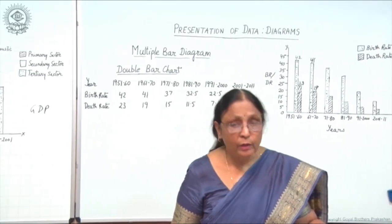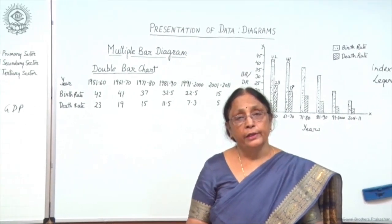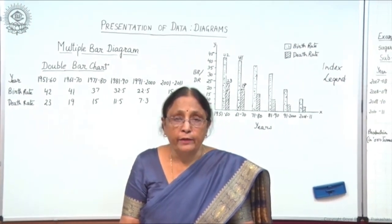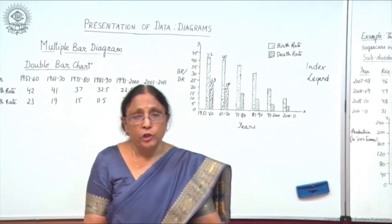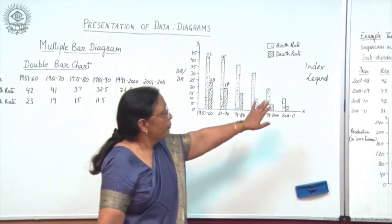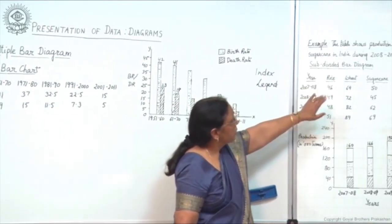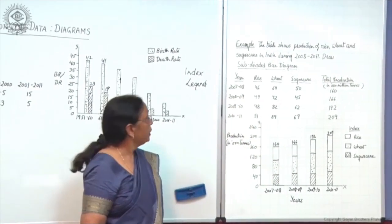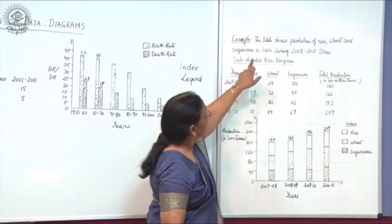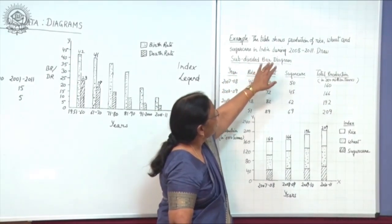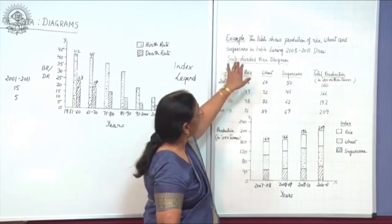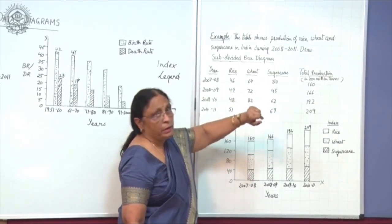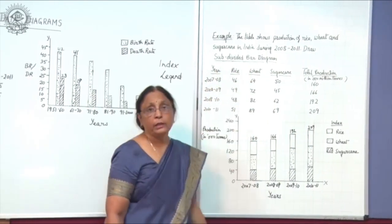Now we will come to another type of diagram, this we call subdivided bar diagram or subdivided chart. Here you will see I have given one example to show the subdivided bar diagram. The example says the given table shows production of rice, wheat and sugarcane in India during 2008 to 2011. Now draw the subdivided bar diagram.